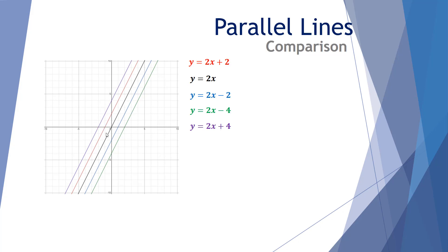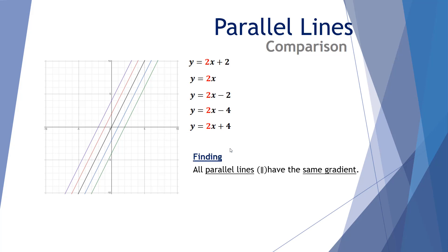They're only being moved up and down the y-axis — translated vertically. The red one is moved from the origin up 2, the blue one is moved down negative 2, the green one down 4, and the purple one up 4. The black one is effectively plus 0, so it stays at the origin. Every one of these equations has exactly the same gradient, so our finding is: all parallel lines have the same gradient — in this case a gradient of 2.